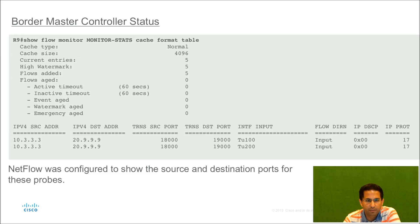In this output, we have configured NetFlow on the spoke router to understand more about these smart probes. As we can see, the IP address used as source for these smart probes is listed as the loopback address of the hub master controller, 10.3.3.3. Similarly, for the destination address of the smart probes, it is listed as 10.9.9.9, which is the loopback address configured on the master controller on the spoke side.